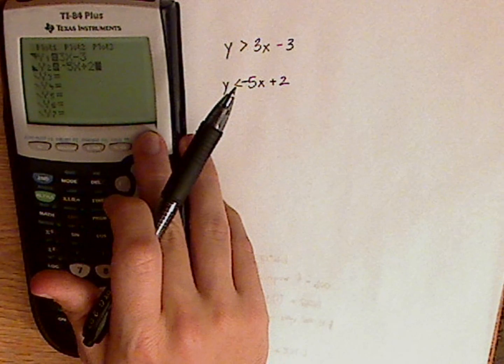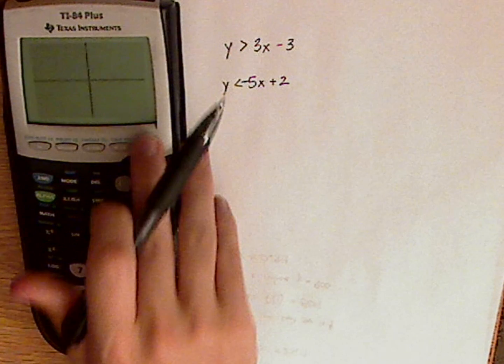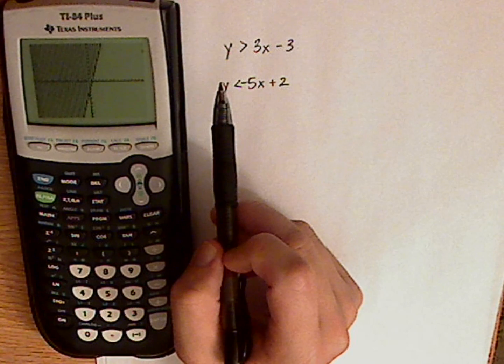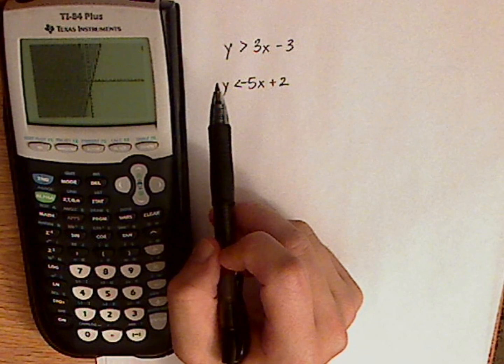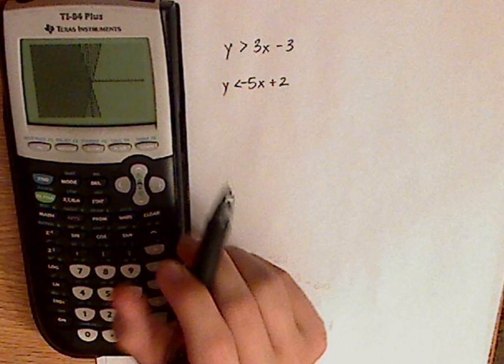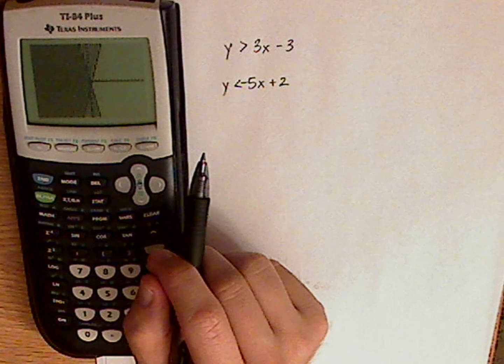And then you just hit the graph button. There's the first inequality. And then there's the second linear inequality. And that's how you graph linear inequalities on your graphing calculator.